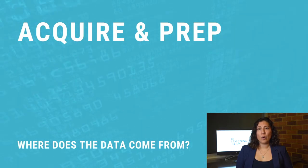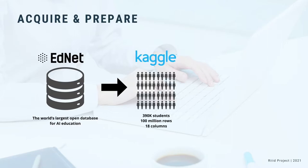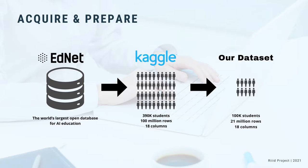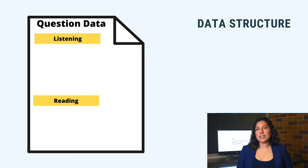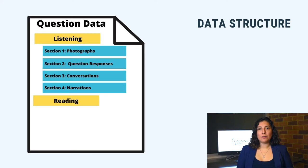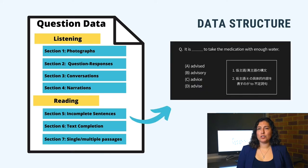Let's take a closer look at how we acquired and prepared the data. Our data was stored in NNET, the world's largest open database for AI education, and we downloaded it from Kaggle. The dataset contained around 390,000 students' performance data and was composed of over 100 million rows. To facilitate exploration, we reduced it to 100,000 students with 21 million rows. The data structure for questions has two segments: listening and reading. The listening segment is composed of sections involving photographs, question responses, conversations, and narration. The reading section is composed of sections involving incomplete sentences, text completion, and passages.